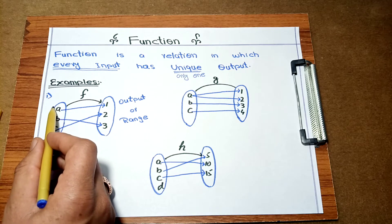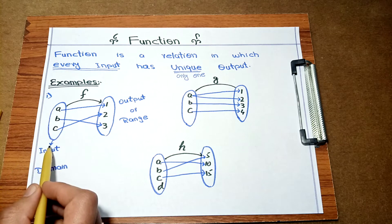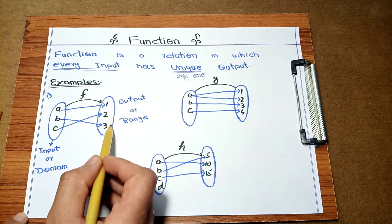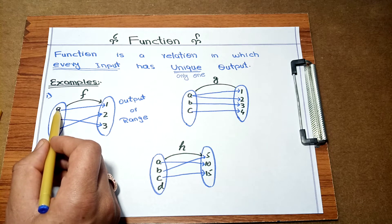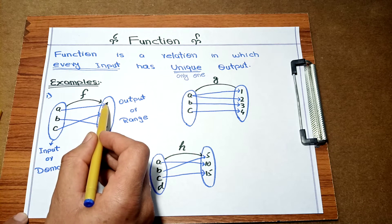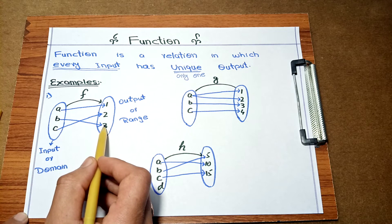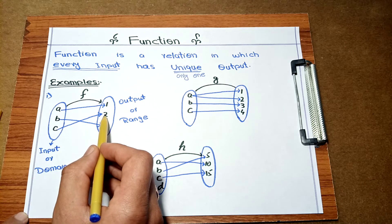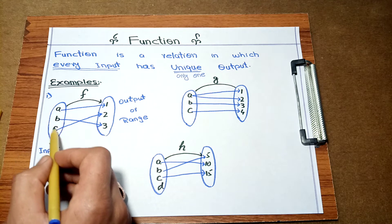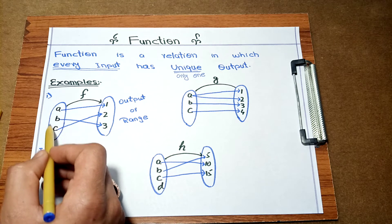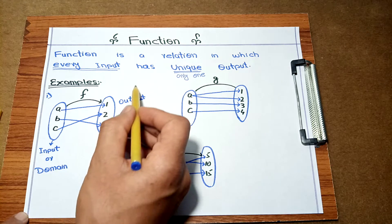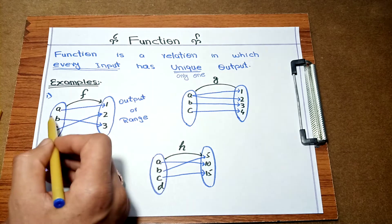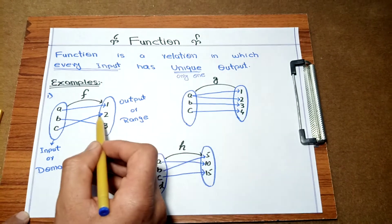Let's see the first example. This is function f. This set is known as the input or domain, and this set is known as the output or range. Input A has a unique output which is 1. B has a unique output which is 3. C has a unique output which is 2. In this example, every input has a unique output, so it satisfies the condition of a function.